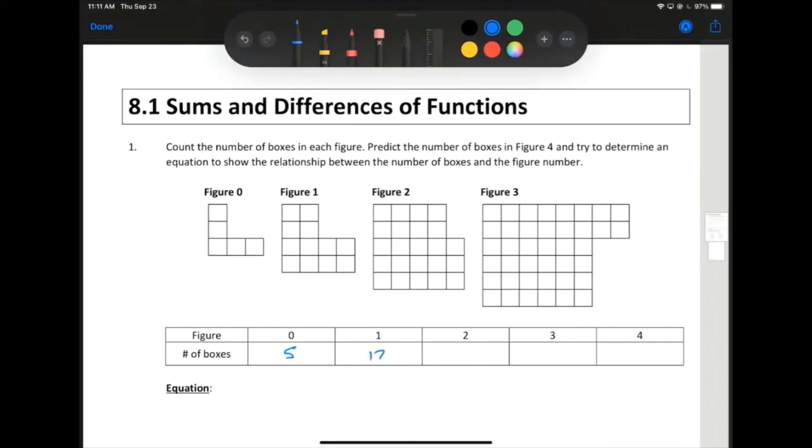Figure one has 12 boxes. Figure two has 23 boxes. Figure three has 40 boxes in total. And there is no figure number four, or maybe we can figure out what figure number four is going to be once we see what the pattern is.